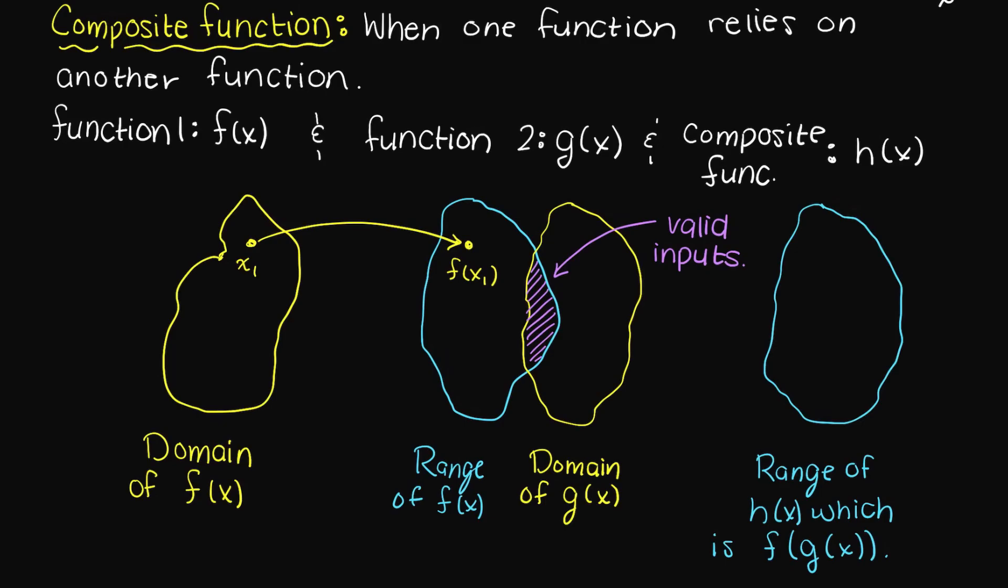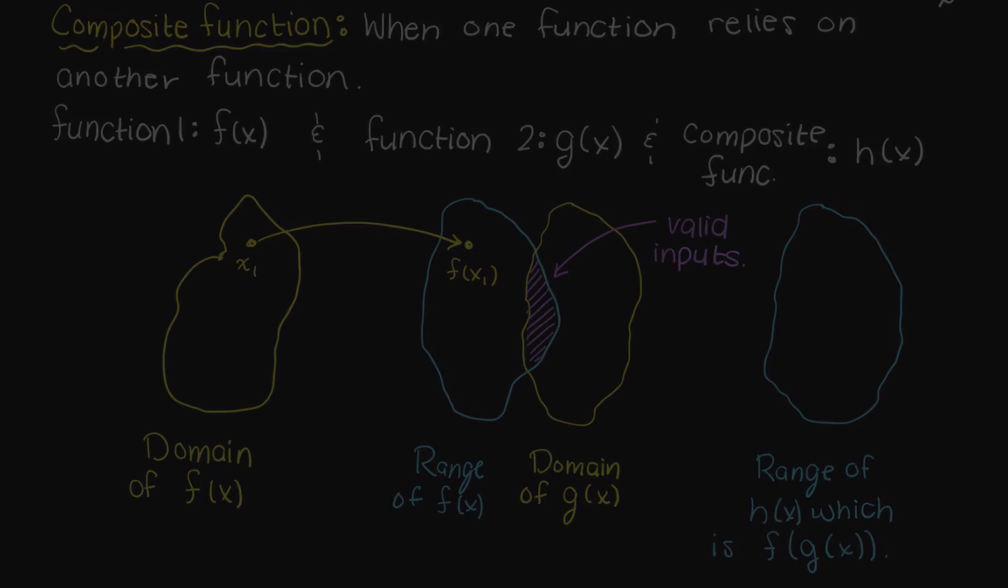So, let's say we have f of x is equal to the square root of x plus 2, and g of x is equal to x plus 1.